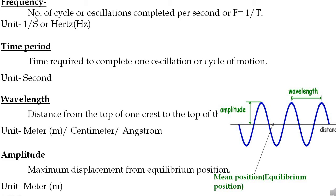Another basic term related to oscillation is frequency. Frequency is the number of cycles or oscillations completed per second. Another definition: it is the reciprocal of the time period. Its unit is per second, or hertz.